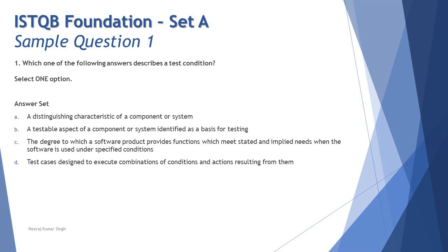Option C: 'the degree to which a software product provides functions which meet stated and implied needs when the software is used under specified conditions.' That's a tricky option designed to confuse you. This is from an advanced level concept called suitability testing — the degree to which a software product provides functions meeting stated and implied needs under specified conditions. This is not in our foundation syllabus at all, so it's not our answer.